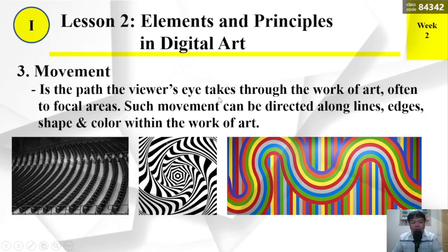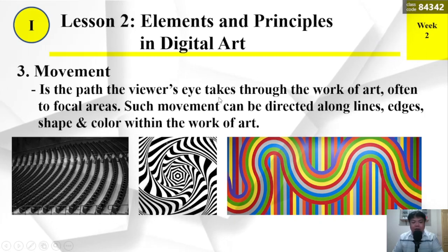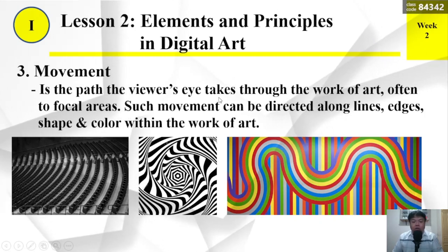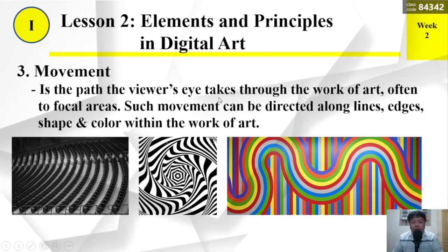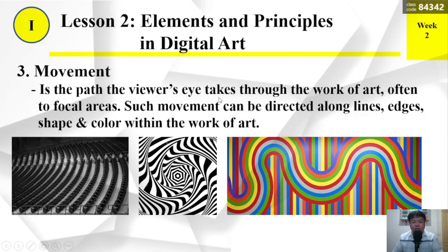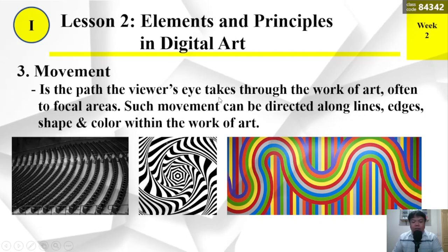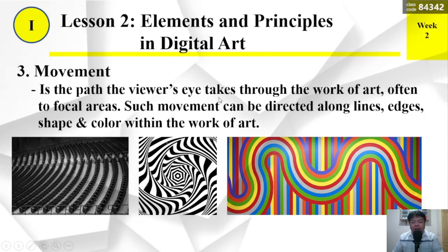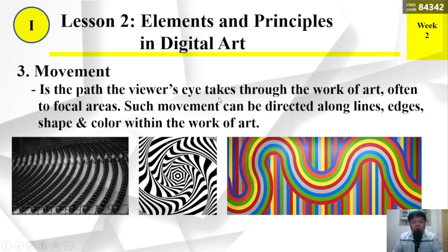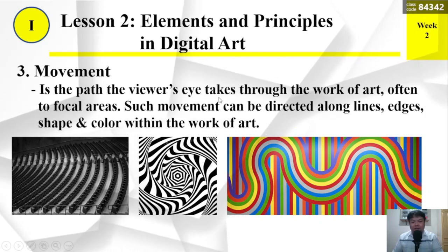Movement is the path the viewer's eye takes through the work of art, often through the focal areas. Movement can be directed along lines, edges, shapes, and color within the work of art.